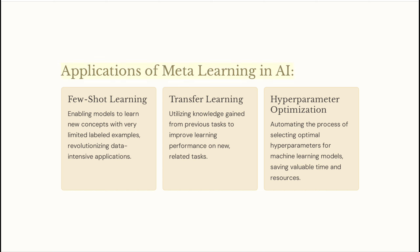Applications of meta-learning in AI. Few-shot learning: enabling models to learn new concepts with very limited labeled examples, revolutionizing data-intensive applications. Transfer learning: utilizing knowledge gained from previous tasks to improve learning performance on new, related tasks.